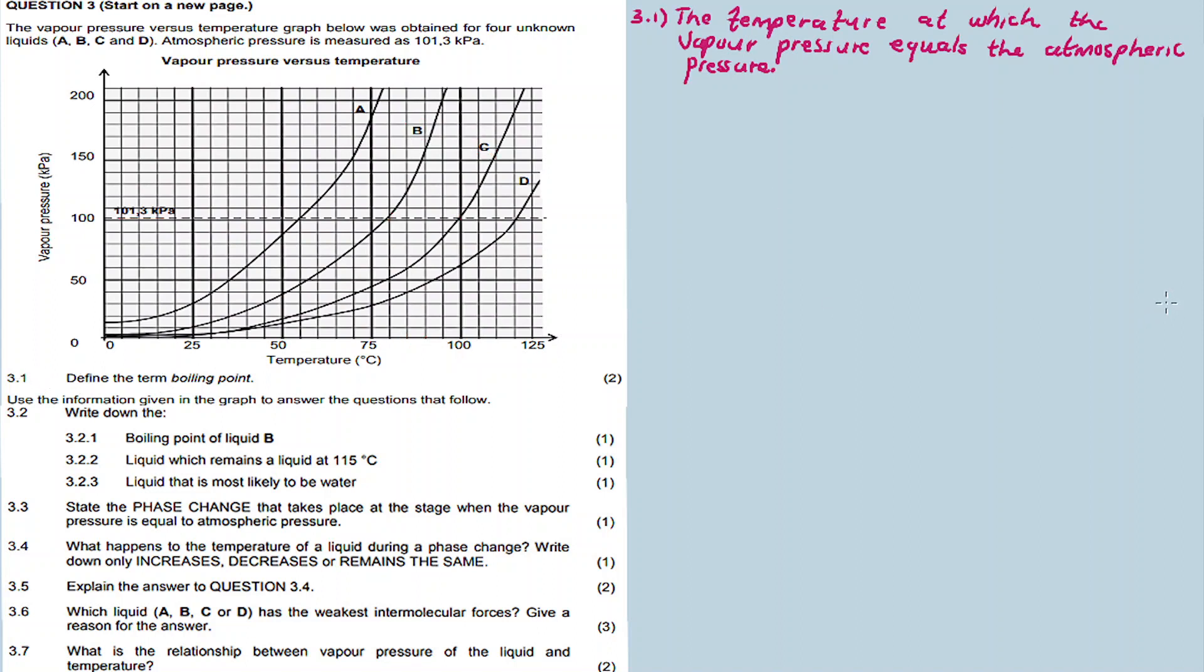Question 3.2: Use the information given in the graph to answer the questions that follow. Write down the boiling point of B. Liquid B is somewhere here, and each line represents 5 degrees Celsius, so it's 80 degrees Celsius. The boiling point for B is 80 degrees Celsius.